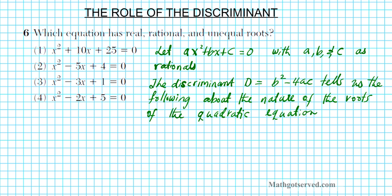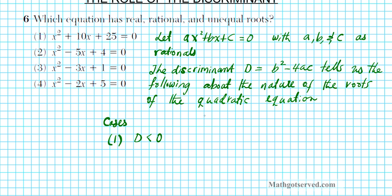There are four cases. Case number one: what if the discriminant is less than zero? If B² − 4AC is less than zero, this implies that the roots are going to be imaginary and unequal.